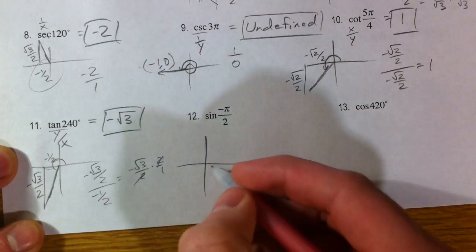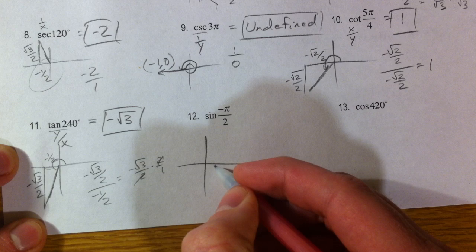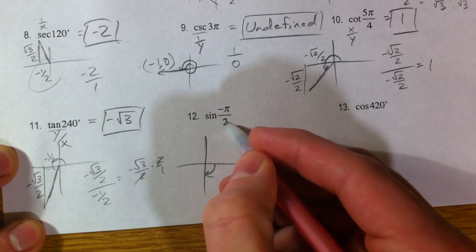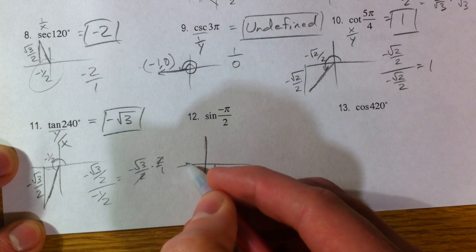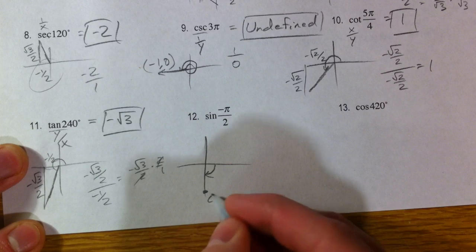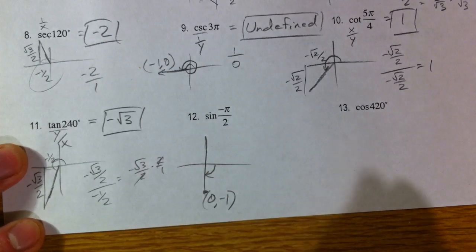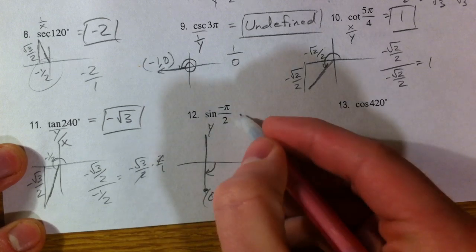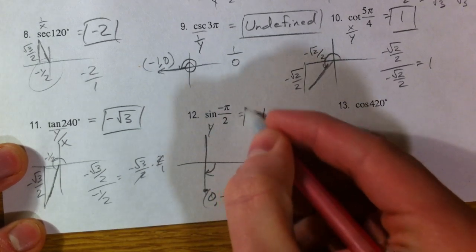Sine of negative π over 2. So, we're going down. Negative π over 2. π over 2, think half of π. π is half of the way around. So, this is a quarter of the way around, so 90 degrees. This is 0, negative 1 down here. So, if I want the y value or the sine value, my y value is negative 1.